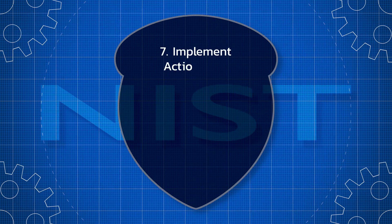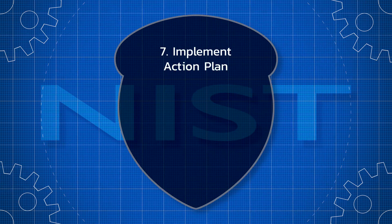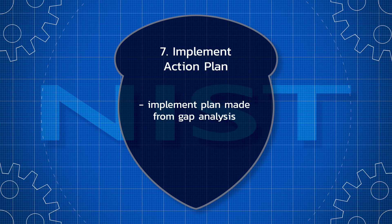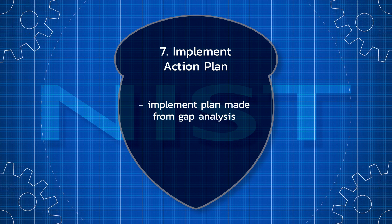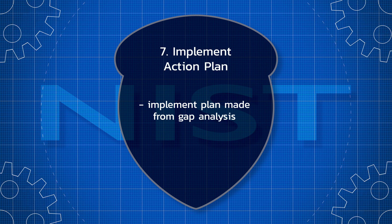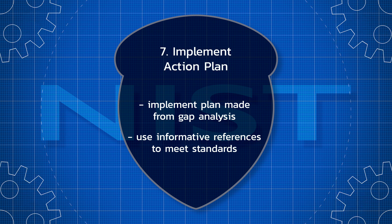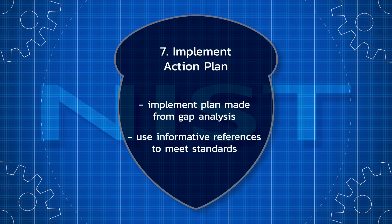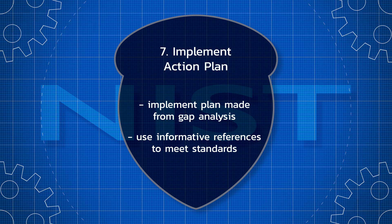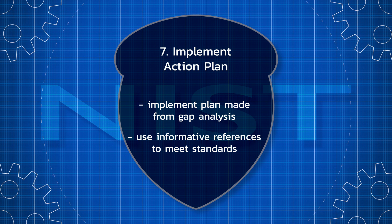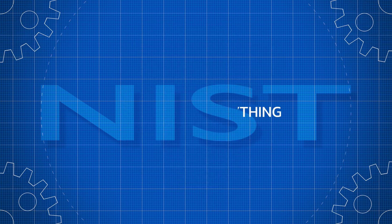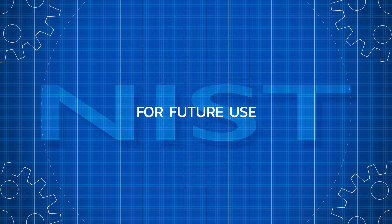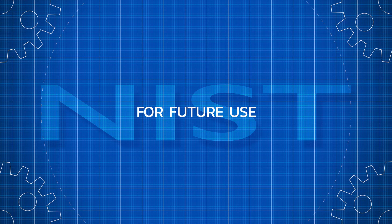Step 7 – Implement action plan: implement the action plan created by the gap analysis in order to achieve your target profile. Use the NIST framework informative references to ensure that your changes meet industry standards. The seven-step process should be thoroughly documented so that it can be easily repeated in the future based on the desired implementation tier.